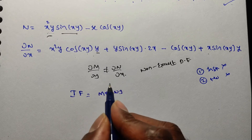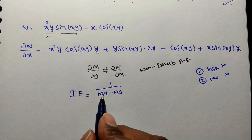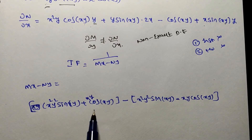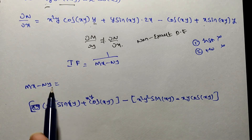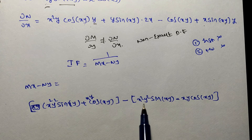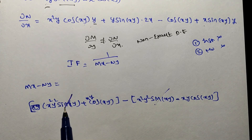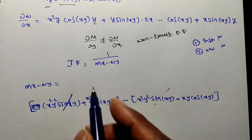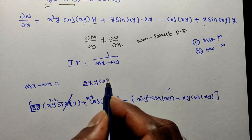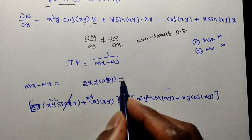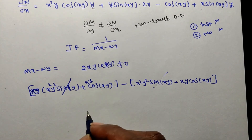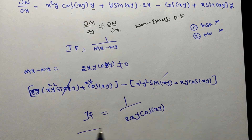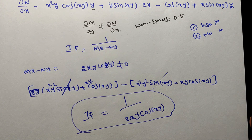Computing Mx - Ny: M·x gives x²y·sin(xy) + xy·cos(xy), and N·y gives x²y²·sin(xy)·... After expansion, the x²y²·sin(xy) terms cancel, and the remaining terms give 2xy·cos(xy). Since Mx - Ny = 2xy·cos(xy) ≠ 0, the integrating factor is 1/(2xy·cos(xy)).